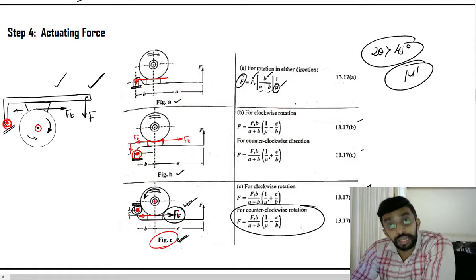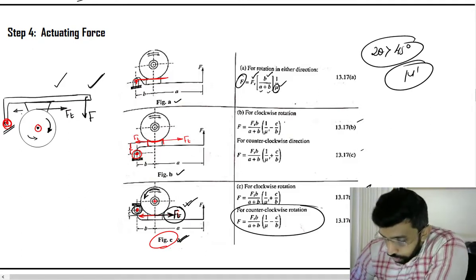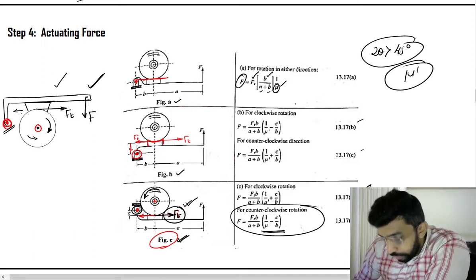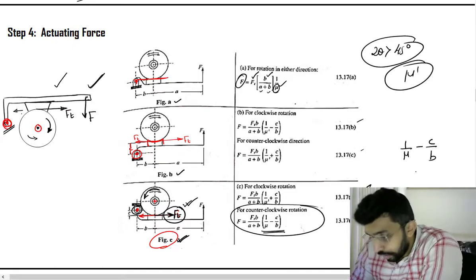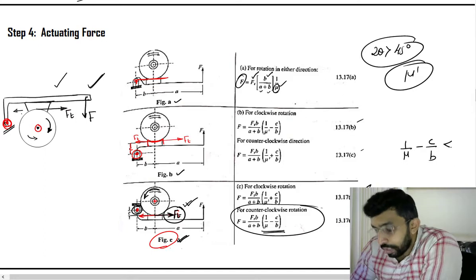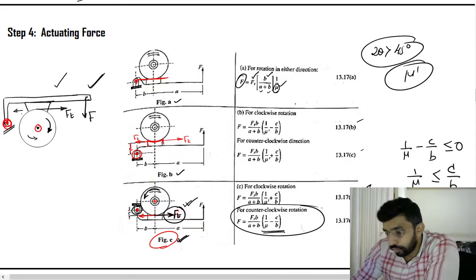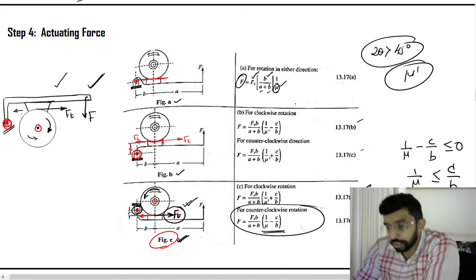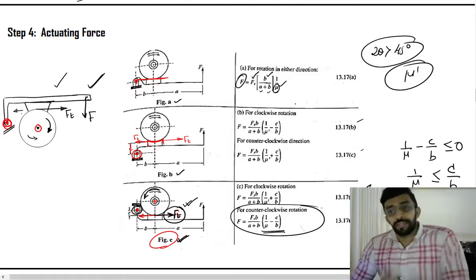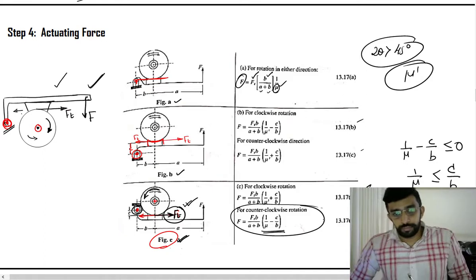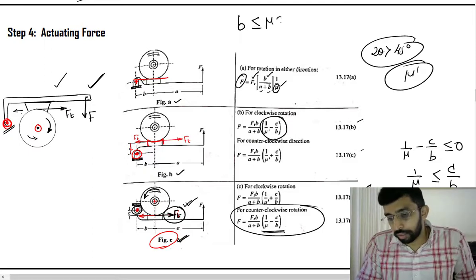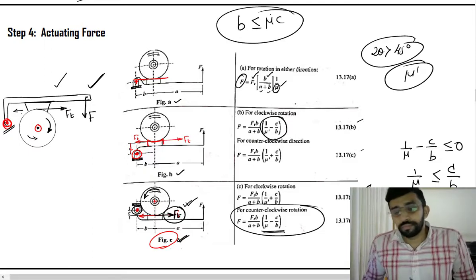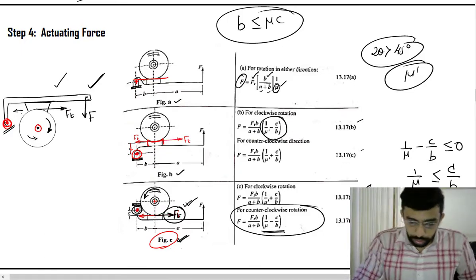We can also calculate the self-locking condition. If you take the bracket term (1/μ − C/B) and set it less than or equal to zero, then 1/μ ≤ C/B, which gives B ≤ μC. This is the condition for self-locking.